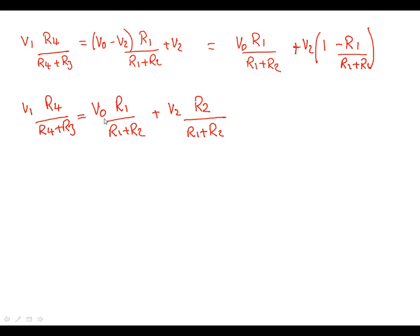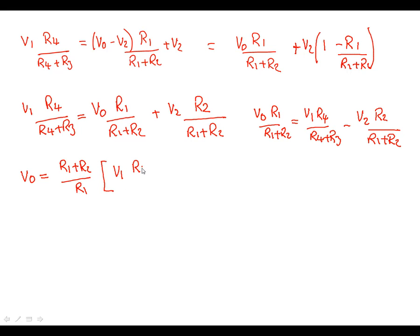So now if we just rearrange that, we'll put Vout on one side, we'll put V in on the other side, or we'll just subtract V2 to the other side. What we now have is Vout R1 over R1 plus R2. Vout is equal to V1 R4 over R4 plus R3 minus V2 R2 over R1 plus R2.